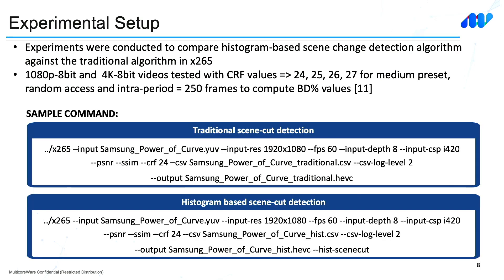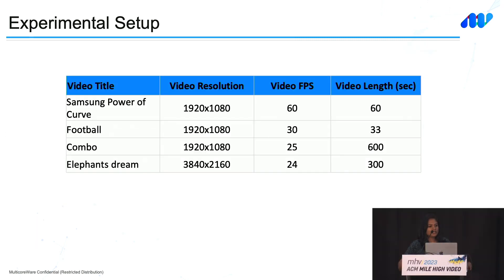The experimental setup used both 1080p 8-bit and 4K 8-bit sequences in X265. We ran CRF encodes from 24 to 27 for medium preset and random access configuration with an intra-period of 250 frames. To enable histogram-based scene detection, the option --hist-scene-cut is added, while the traditional algorithm is enabled by default. Video sequences ranged in FPS from 25 to 60 and in length from 30 seconds to 10 minutes.